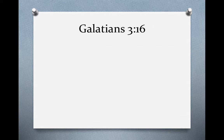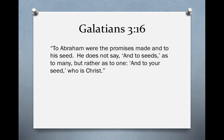Galatians 3:16 illustrates the importance of understanding third declension formations. That verse says, 'To Abraham were the promises made, and to his seed. He does not say, and to seeds' — you can see that noun is plural — 'as to many, but rather as to one, and to your seed, who is Christ.' Paul is basing his argument on a messianic prophecy made to Abraham based on how that noun appears.